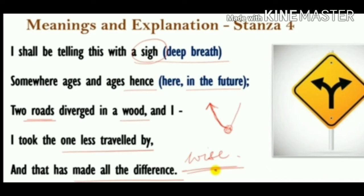He will sigh either with relief or regret, depending on whether he made the right or wrong decision. The poet knew he had chosen a more challenging, different path and thinks that if he had taken the other road his life would have been different. The result of taking the less travelled road was that his life was changed — that's why he used the word 'difference'. Choosing the less travelled road instead of the other has made all the difference in his life.